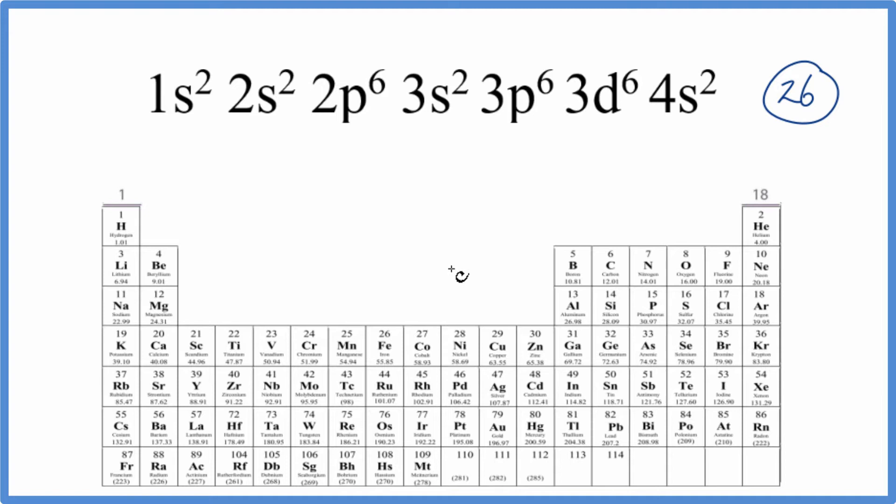Because on the periodic table the atomic number, so this is the atomic number here, equals the number of protons, and all of these elements are neutral. They don't have a plus or a minus sign after them. That means that the number of protons, the atomic number,